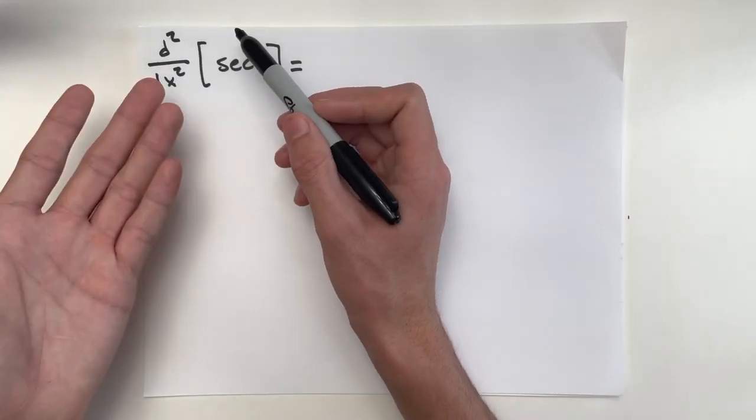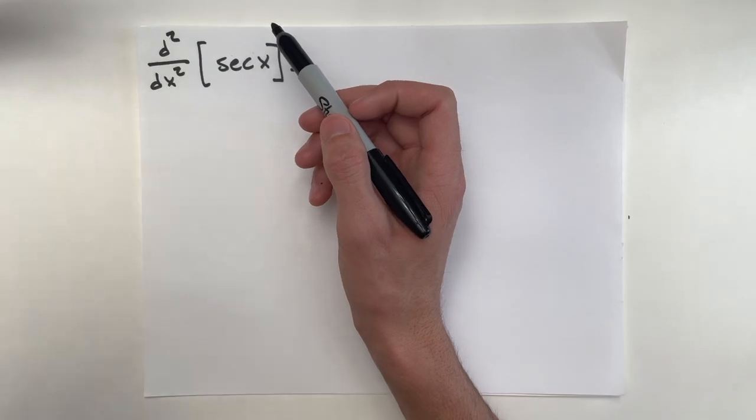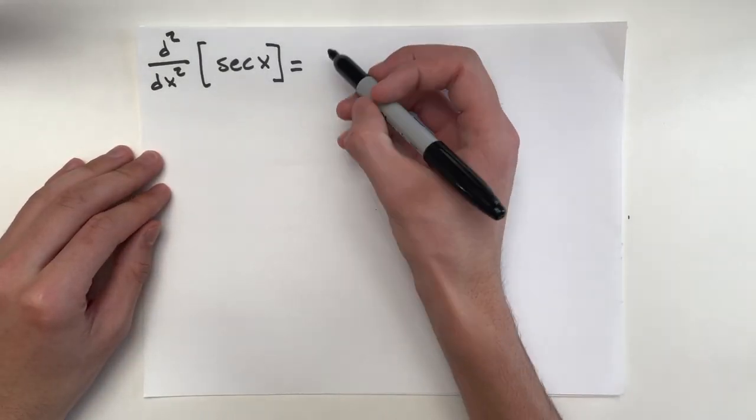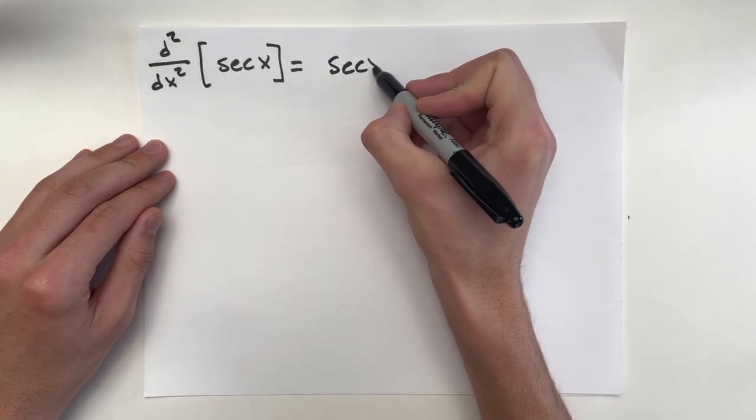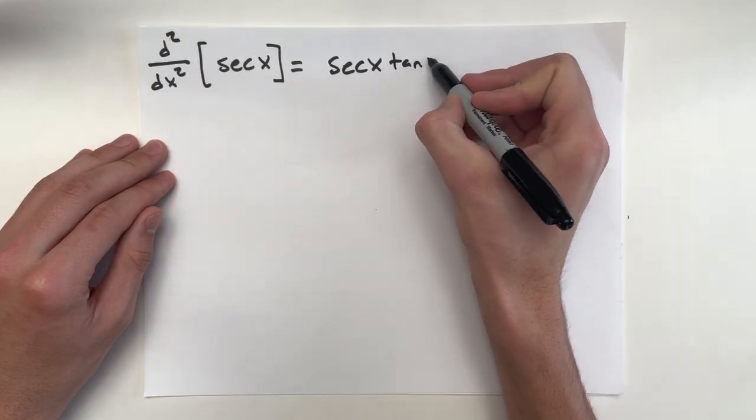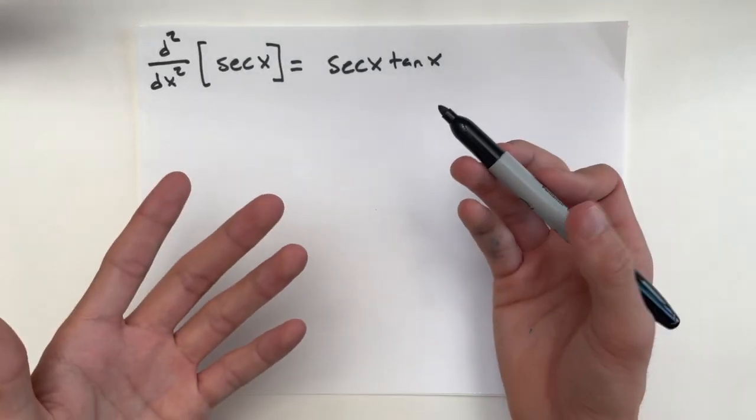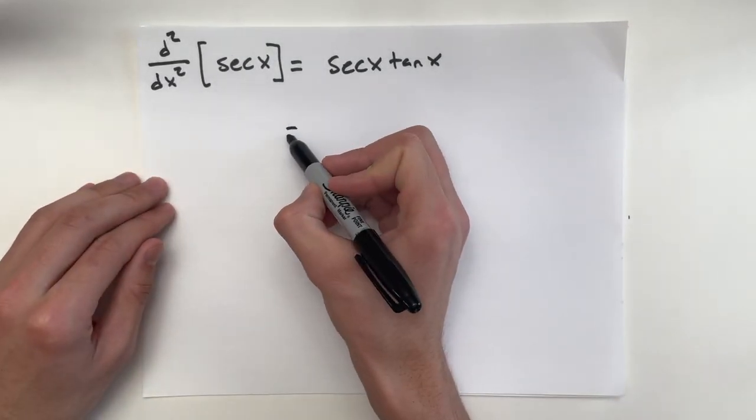In order to find the second derivative, we have to find the first derivative. Pretty easy for the first derivative - we know that the first derivative of secant x is simply secant x tangent x. But we're not done yet. We have to go another step further.